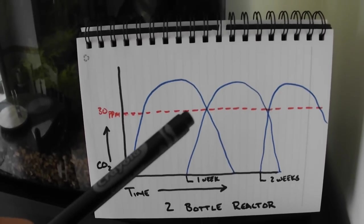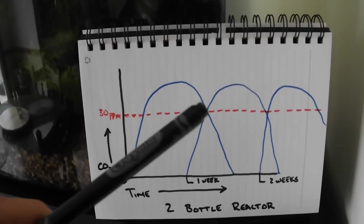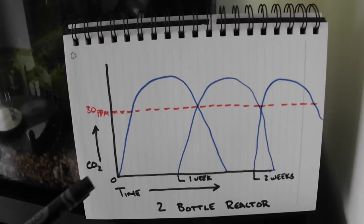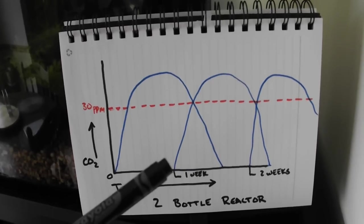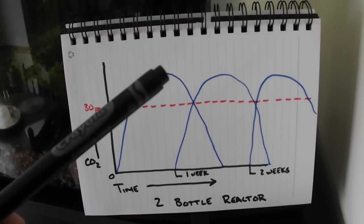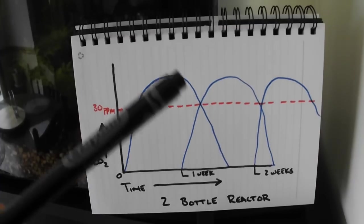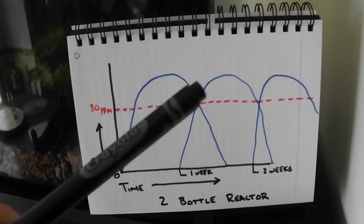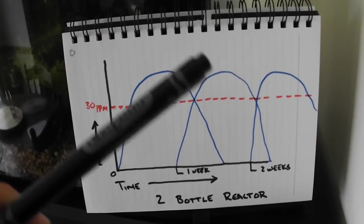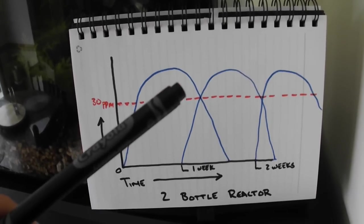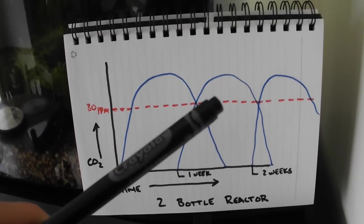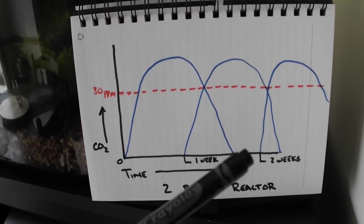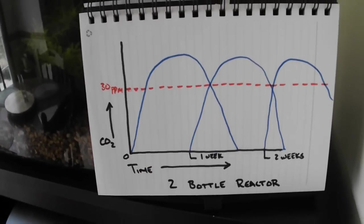And the point is to dial it in to where your 30 parts per million stays relatively constant. So your first week, you're up. You start your second bottle while you're in the peak of the first. And as that grows, as the first week is coming down, the second bottle is coming up. And they eventually cross in the center point here, keeping your 30 parts per million pretty constant. Then as that's coming down, on week two, you start your next bottle. And so on and so forth.